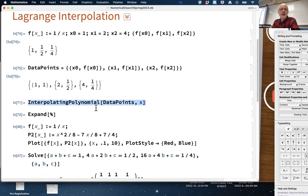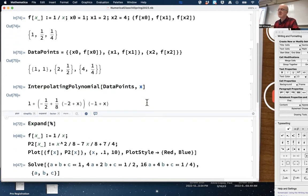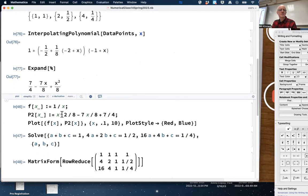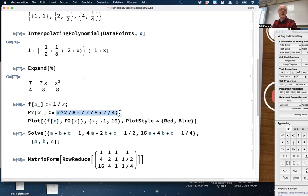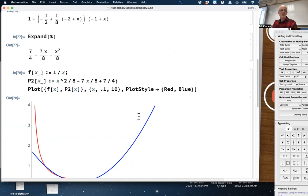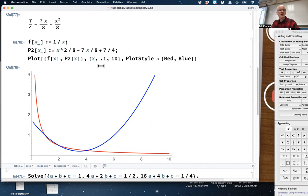I didn't show you this before, but Mathematica has got a built-in command called InterpolatingPolynomial that takes as input those data points and the variable name and gives you output the interpolating polynomial. Although that's in kind of a strange form, isn't it? That's in nested form. We did talk about nested form. But of course, we can expand that and see that we got the same answer that we did on Tuesday. This polynomial: x²/8 - 7x/8 + 7/4.